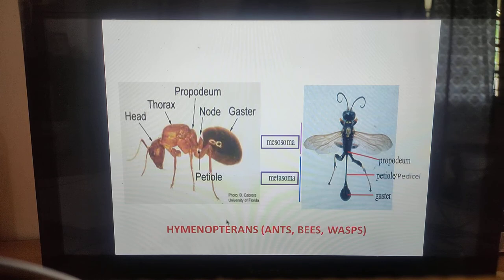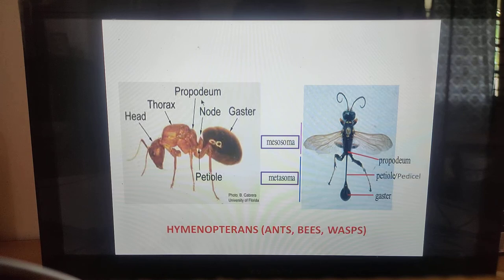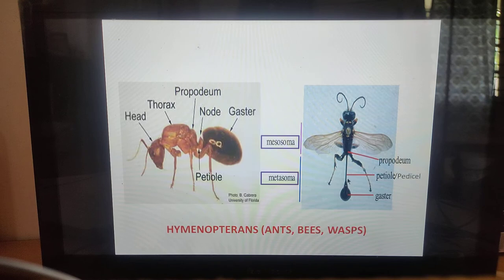In hymenopterans, which include ants, bees, and wasps, the first abdominal segment is fused with the third thoracic segment (metathorax) forming the propodeum. The propodeum is the fusion of the metathoracic segment and the first abdominal segment. Often the second segment forms a narrow petiole, also called pedicel, and the rest of the abdominal segments are called the gaster, also known as metasoma.